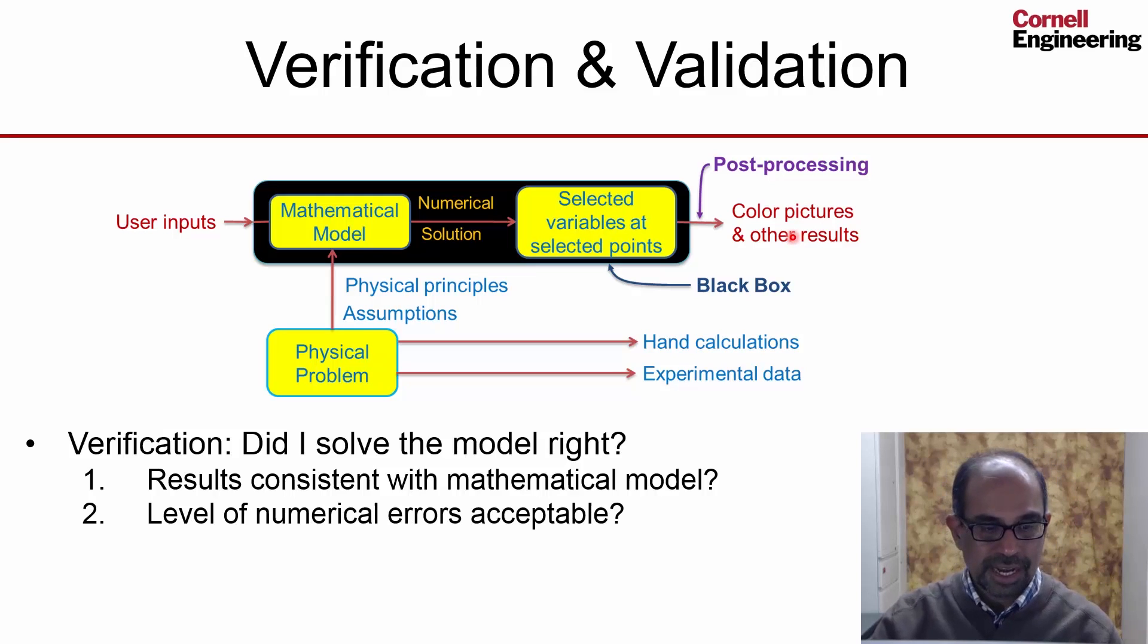The second category of checks deals with whether the level of numerical errors is acceptable. So the errors introduced by the tool as it solves the mathematical model numerically, whether those numerical errors are acceptable. And for instance, this is where one would check what's the dependence on the mesh. And that's something that students get intuitively, but we need to do other checks in this category too.